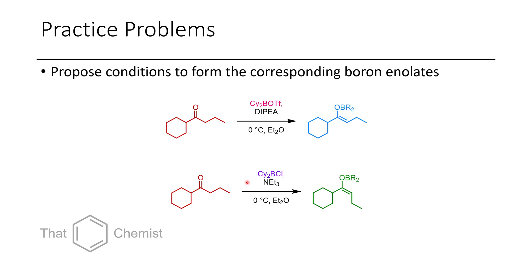Now, in the next case, we want the E-enolate product. And so we would have to use dicyclohexyl boron chloride with triethylamine.